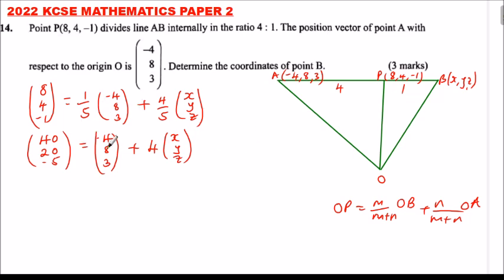Now, we can take this to the other side. So, we will have 4 into bracket (X, Y, Z) on one side and this will be (40, 20, -5). Then we say it is minus. This changes to minus. So, minus (-4, 8, 3).